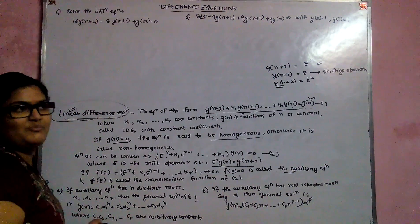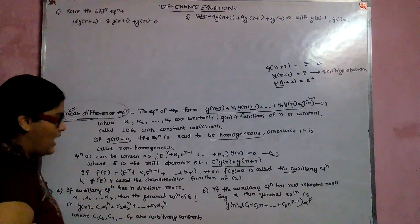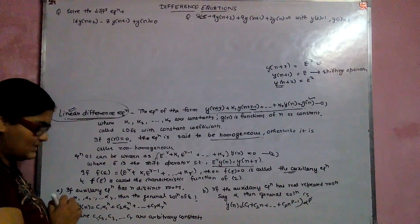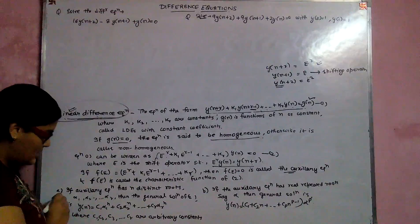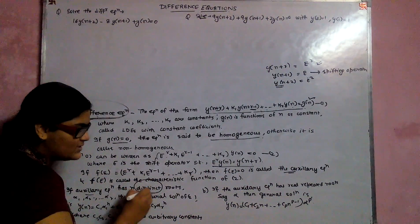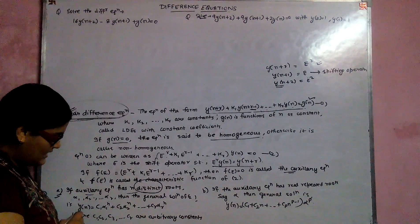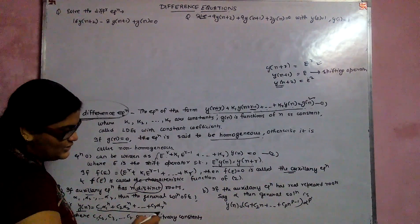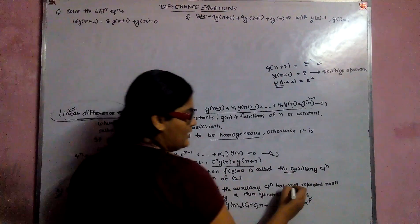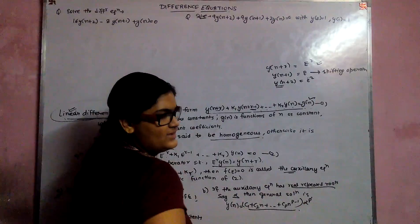Now we take some examples to solve homogeneous differential equations. If the auxiliary equation has distinct roots (roots are not equal), the solution is written in one form. And if there are repeated roots like alpha, then the solution is written in another form.